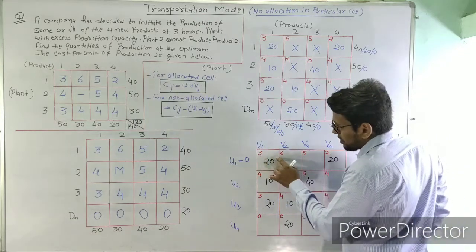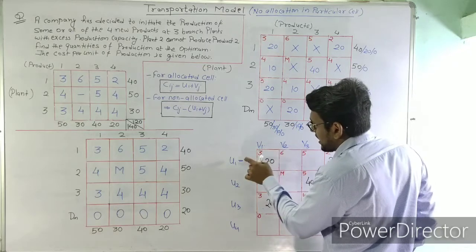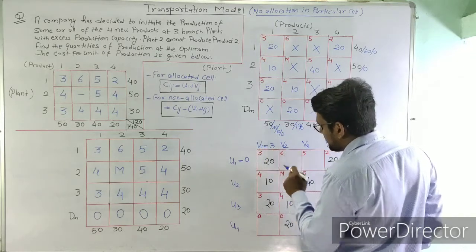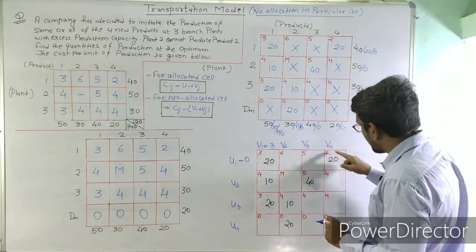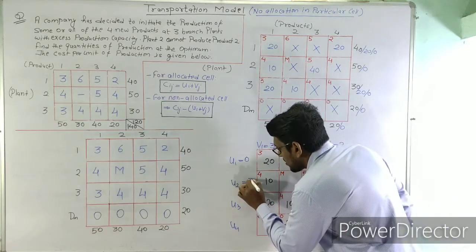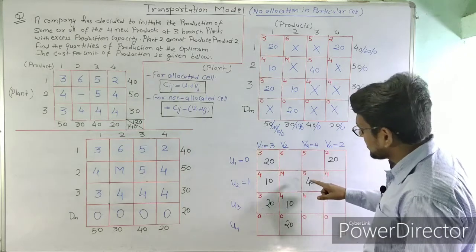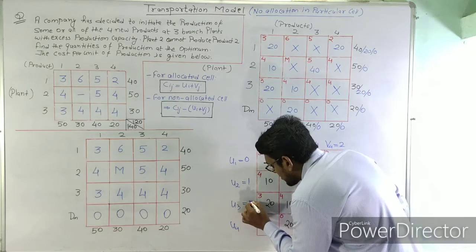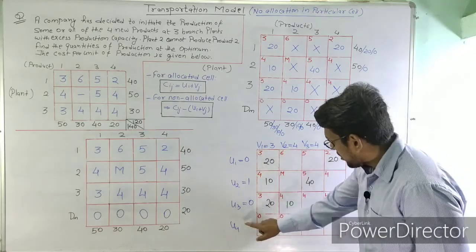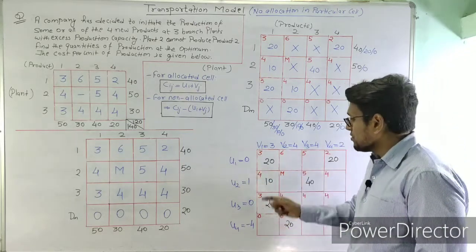Setting u1 = 0, we use the condition Cij = ui + vj for each allocated cell. From the allocations we find: v1 = 3, v2 = 2, then u2 = 1 (since 4 = 1 + 3), v3 = 4, v4 = 0, u3 = 0, and finally u4 = −4 (since 0 = u4 + 4). All u and v values are now determined.